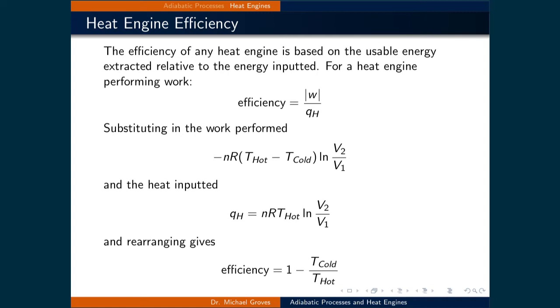The heat inputted occurred in the isothermal expansion. We saw that the work performed in this step was negative nRT_hot times the natural logarithm of V2 over V1. Since this is an isothermal process, the heat transferred is equal to the negative of the work. So the heat inputted into the system is nRT_hot times the natural logarithm of V2 over V1.